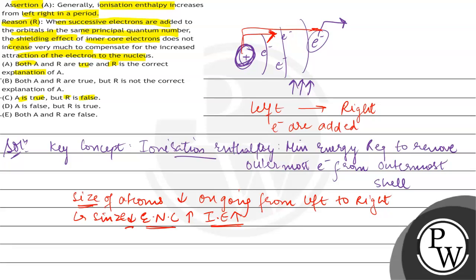Now, the reason is that as the successive electrons add in the same principal quantum number, the shielding effect of inner core electrons - now there is one other term used, which is shielding effect. What is shielding effect?